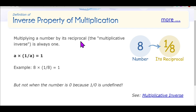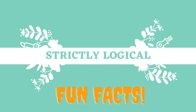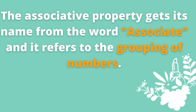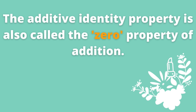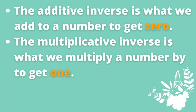The inverse property of multiplication says that multiplying a number by its reciprocal (multiplicative inverse) always gives 1. For example, the number is 8 and its reciprocal is 1/8; eight into one-eighth equals one. However, this property is not applicable on zero because the multiplicative inverse of zero is 1/0, and 1/0 is undefined.